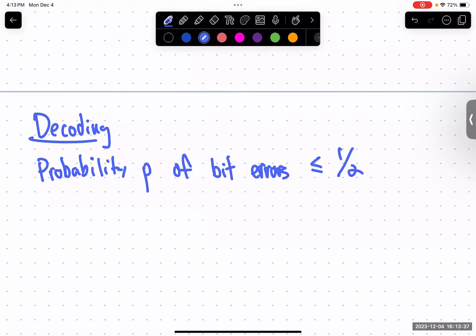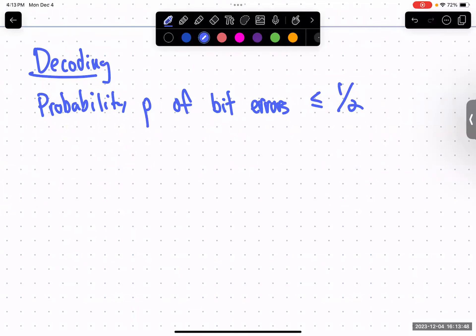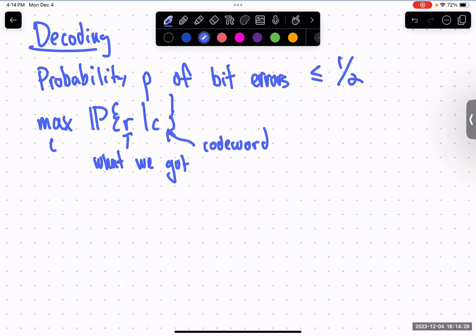p of bit errors is less than one half. If it's more than one half, then things get strange. And you're kind of, if it's more than one half, then you should reconsider whether turbo codes are the right thing to use. So we'll assume like less than half probability of bit errors. And now we want to solve a maximization problem. We want to maximize probability of r given c, where r is what we got. And c is some code word. So we want to figure out the c that maximizes the probability of what we received, if that was the actual code word.